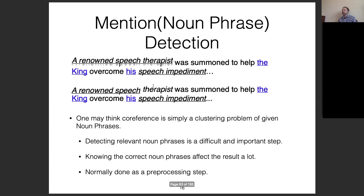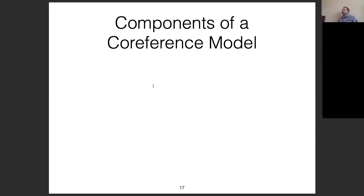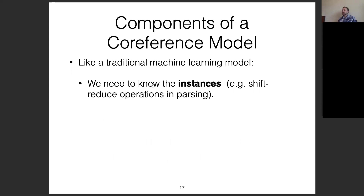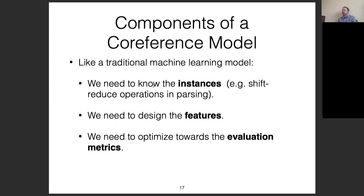Components of a co-reference model: like a traditional machine learning model, we need to define instances — for example, shift-reduce operations as in parsing — and we need to define features to select the correct answer. We also want to optimize towards evaluation metrics corresponding to our final downstream use case. Co-reference is a structured prediction problem: the assignment of entities to clusters is a combinatorial optimization problem, so we need a search algorithm for the underlying structure.